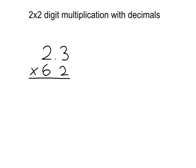Welcome to 2 by 2 digit multiplication with decimals. Our question is 2.3 times 62. Just like in the 3 by 1 digit examples of tenths and hundredths, we do not have to fear the decimal — nothing changes. We can simply treat this question the same way as 23 times 62, and then deal with the decimal afterwards.